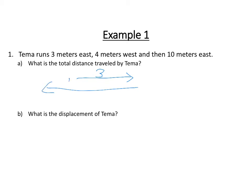Then she runs back west for four meters. Then she turns around again and runs ten meters east this way. Okay, so for total distance, we literally just add these up. Three plus four plus ten. We don't care about the direction. So this is going to be seventeen meters. So Tema traveled a total of seventeen meters.